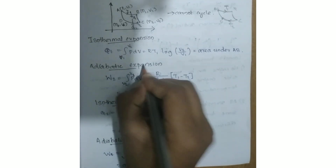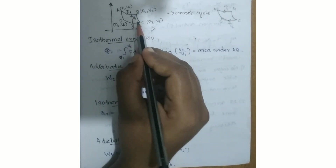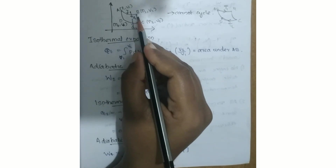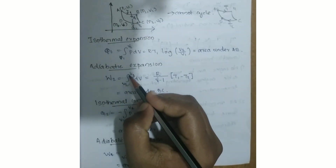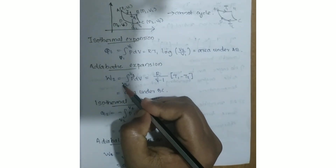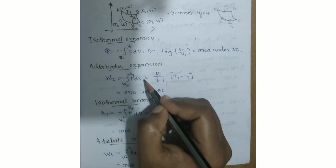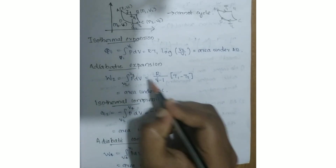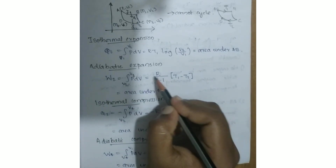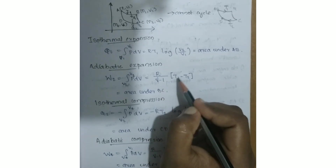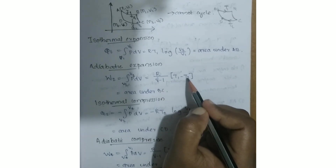Adiabatic expansion BC is given by the equation: integral of V2 to V3 of P dV equals R divided by (gamma minus 1) multiplied by (T1 minus T2).